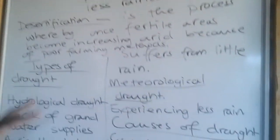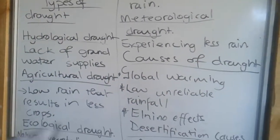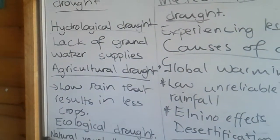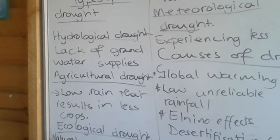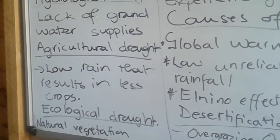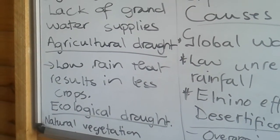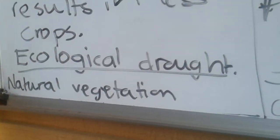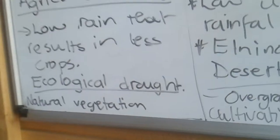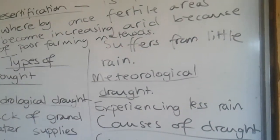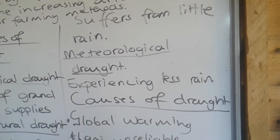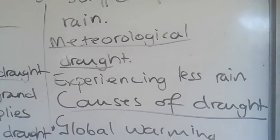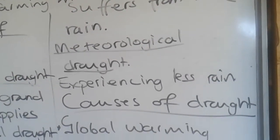When we look at drought, we always look at the types of drought. Hydrological drought is when we experience less rainfall to the extent that it also depletes the groundwater systems. Agricultural drought is when low rainfall results in less agricultural crops. Ecological drought is where natural vegetation suffers from little rainfall and starts to dry up. Meteorological drought is when we are experiencing less rainfall in our atmosphere. The main cause of all these types of drought is low, unreliable rainfall.